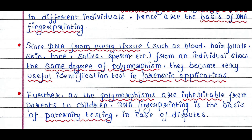Since DNA from every tissue — such as blood, hair follicles, skin, bones, saliva, sperm, etc. — from an individual shows the same degree of polymorphism, it becomes a very useful identification tool in forensic applications. You can extract DNA from any sample. If you are a forensic expert collecting samples from a crime scene, it is straightforward because DNA and its satellite regions are exactly the same in all cells.